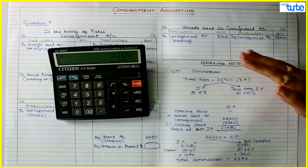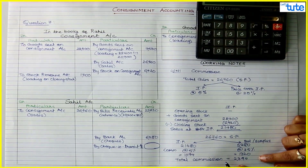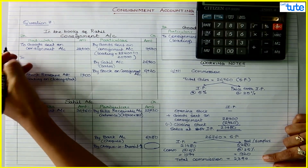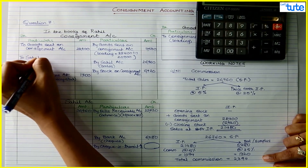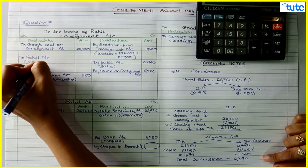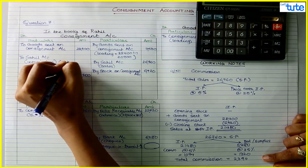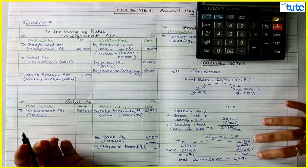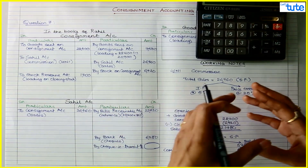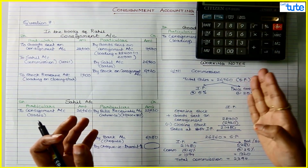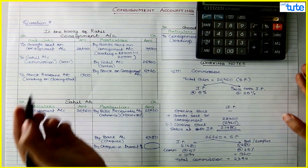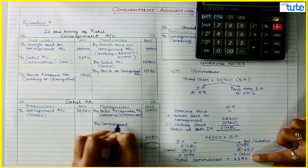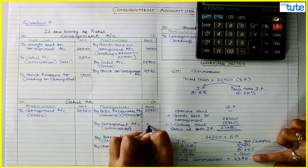Commission is an expense for the consignor, so debit consignment account and credit Sahil account for commission 2,394 (working note 1). The second effect: in Sahil's account, by consignment account for commission 2,394. This working note explains how we bifurcated selling price into invoice price and surplus price to arrive at total commission of 2,394.